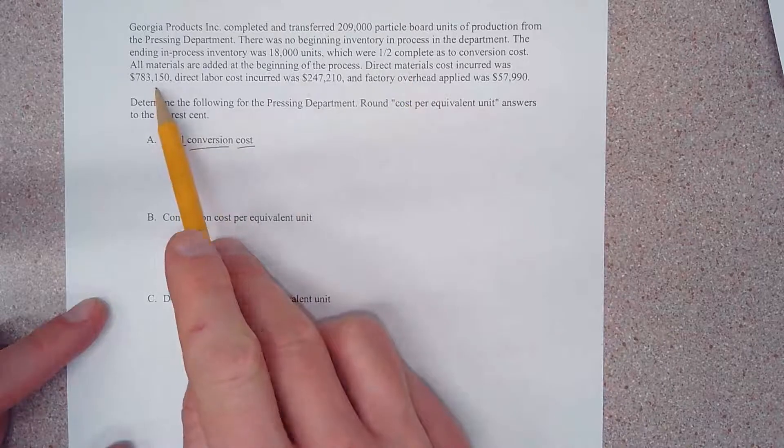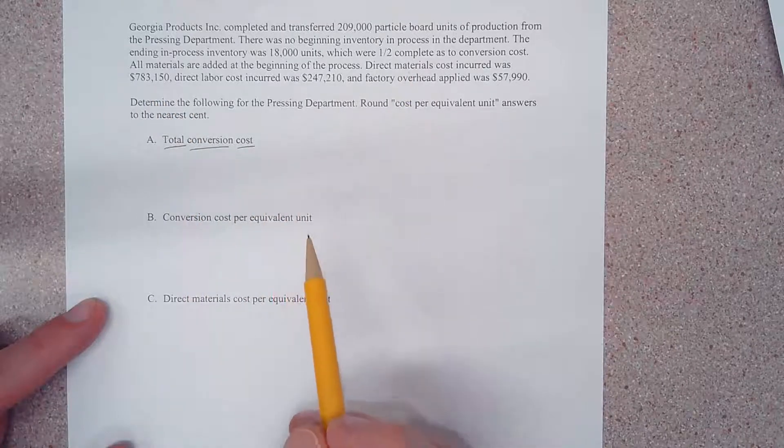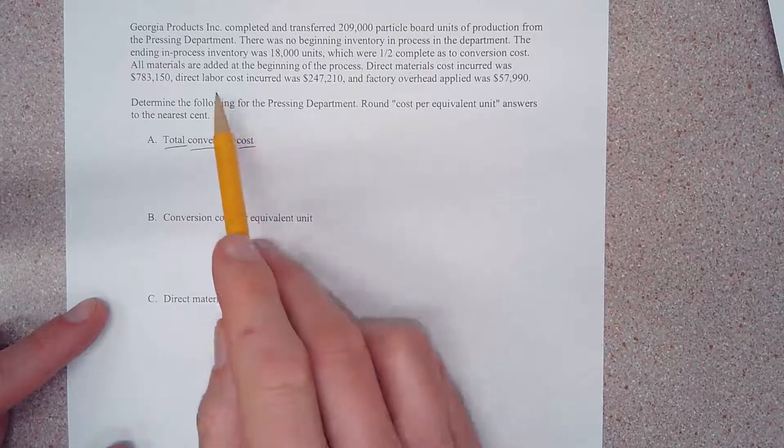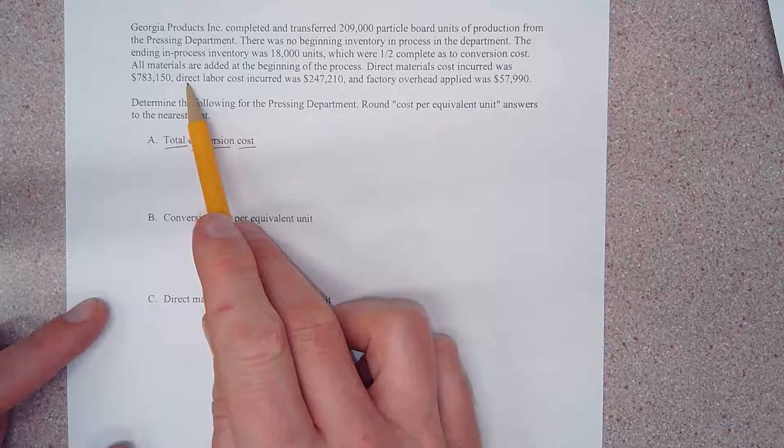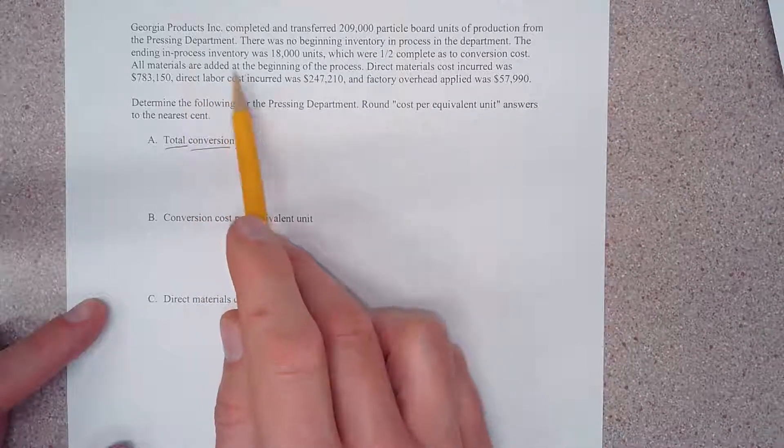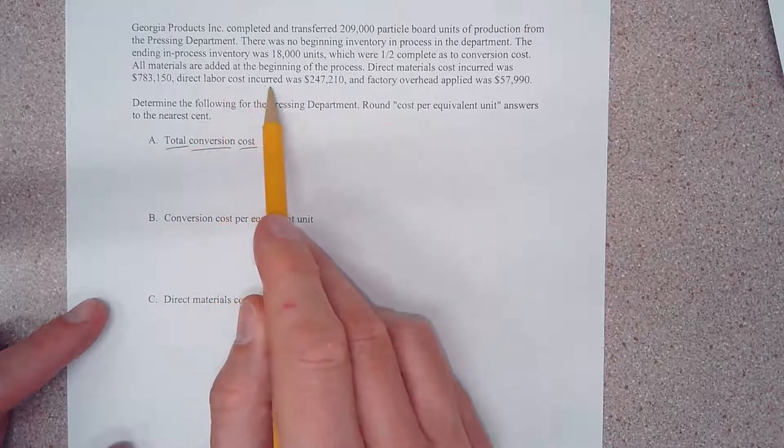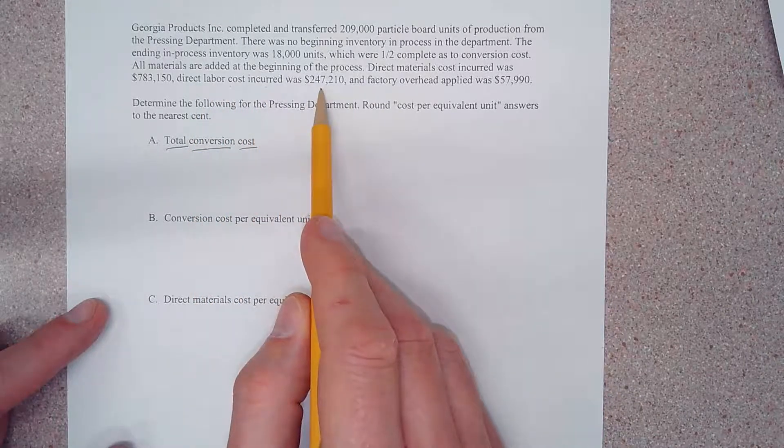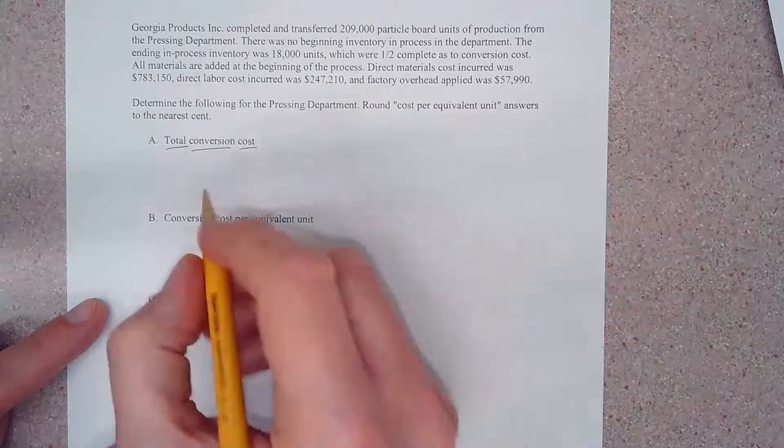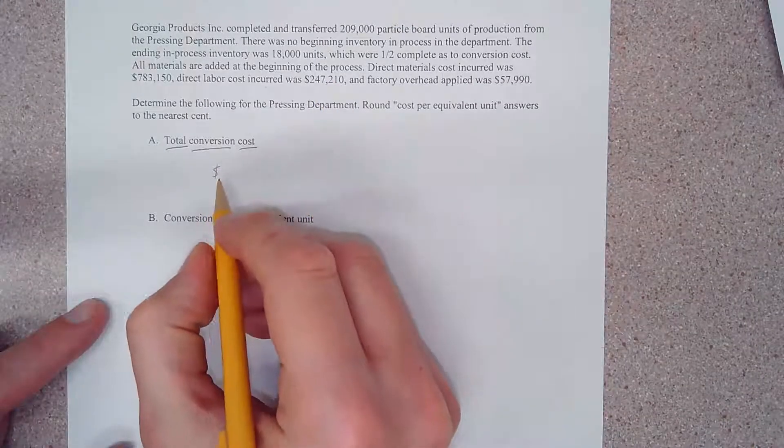Well we have three costs here. Direct materials are not a conversion cost, so ignore that. However, we're going to convert direct labor into a product, so we are going to be concerned with this direct labor costs incurred of $247,200. So let's plot that.